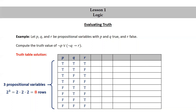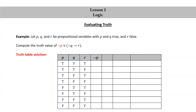We now need a column corresponding to each substatement that appears in the given statement. So we'll need a column for not p, for not q, for not q implies r, and finally the whole statement itself: not p or not q implies r.